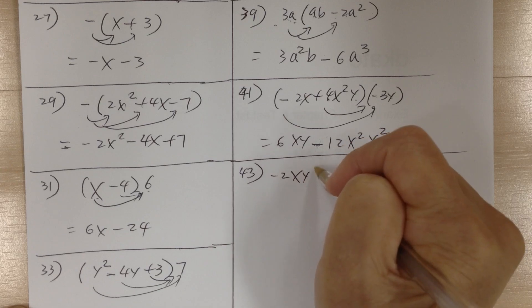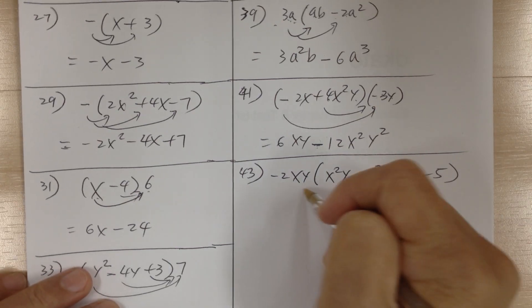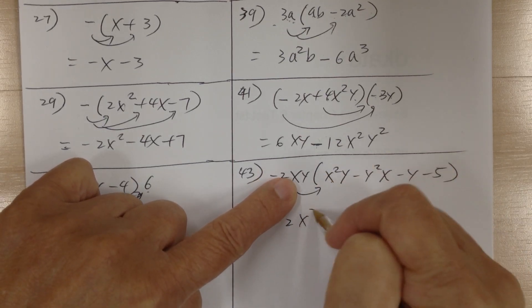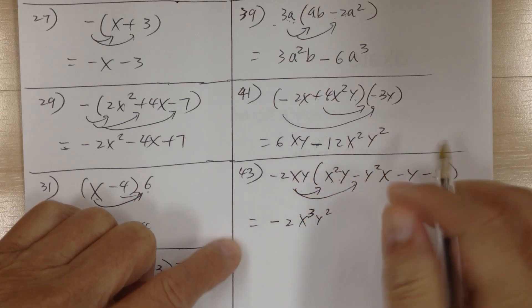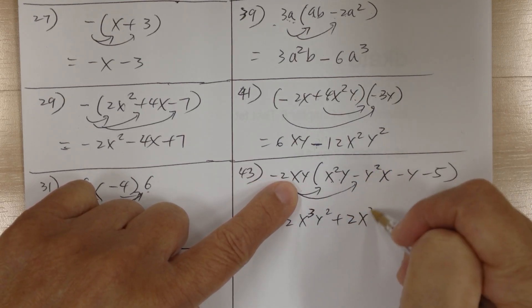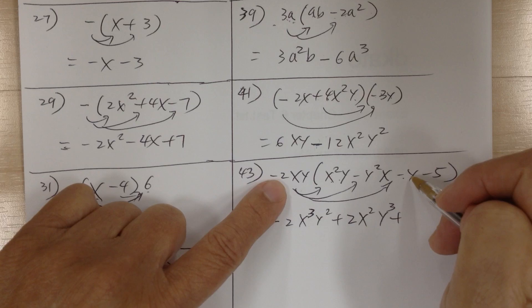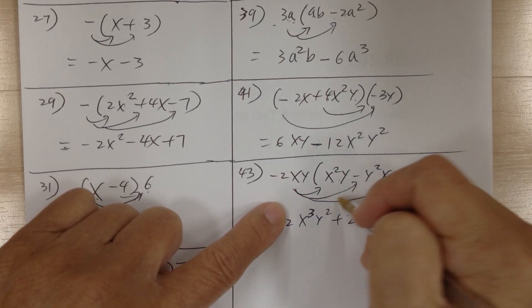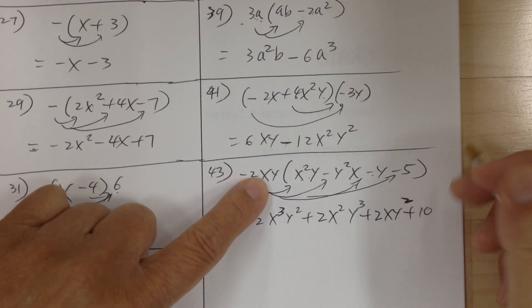Number 43. You have negative 2xy times (x squared y minus y squared x minus y minus 5). Distribute — go down the alphabet. First term: sign is positive (negative times negative), number is 2, alphabet gives x squared and y cubed, so 2x squared y cubed. Next: sign is positive, number is 2, alphabet is xy squared, so plus 2xy squared. Next: sign is positive, number is 10, alphabet is xy, so plus 10xy.